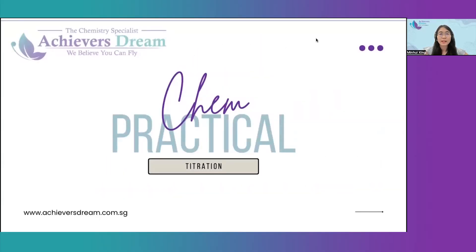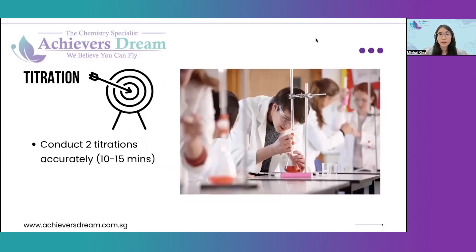Before going to the chemistry practical examination, you should be familiar with the type of questions that you will be tested on. Students should have some experience based on those chemistry practical sessions you went through with your school teachers or teachers in AD. One of them will be titration, whereby it is an experiment where a known property of one solution is used to infer an unknown property of another solution.